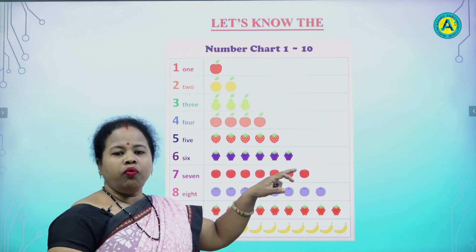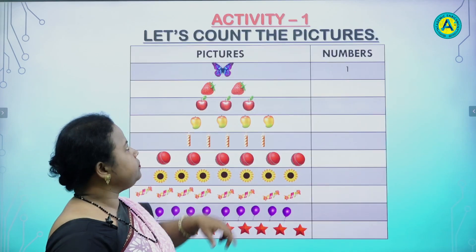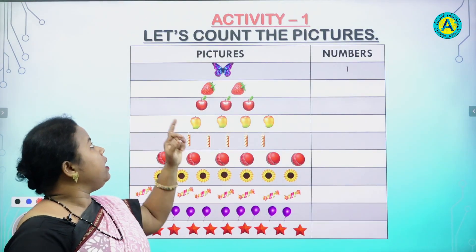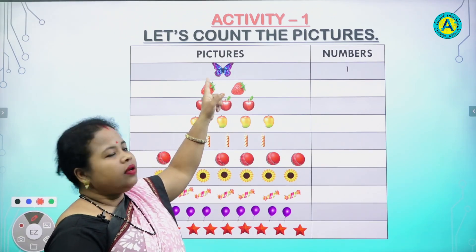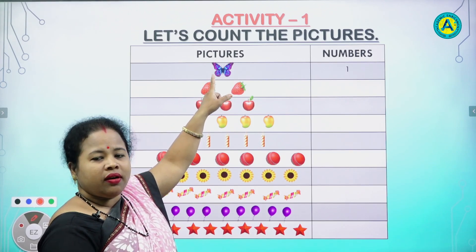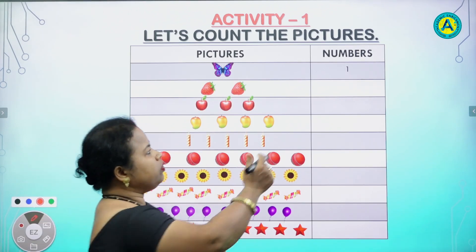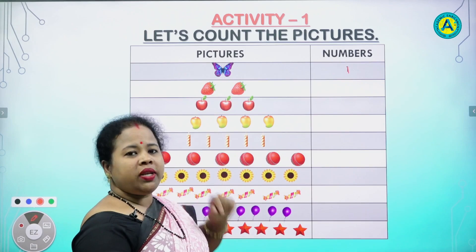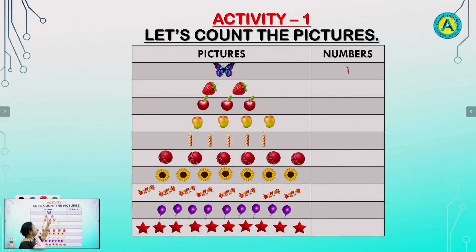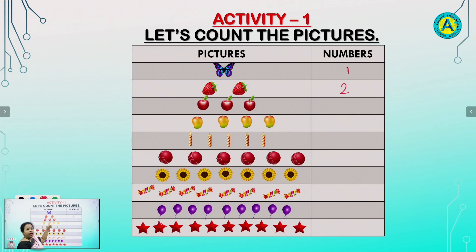Now, children, go for the next slide. Activity 1. Let's count the pictures and say the number. How many butterflies are there? 1. Very good. Write 1. In the next line, how many strawberries are there? Count. 1, 2. Write 2. Then students, count the apples. 1, 2, 3. Very good. Write 3.